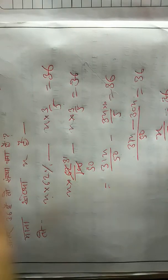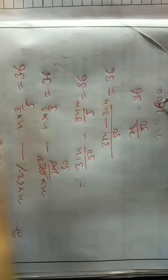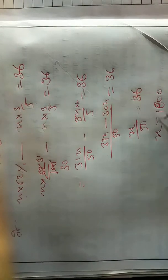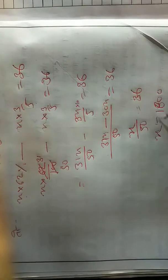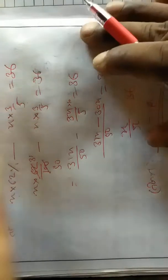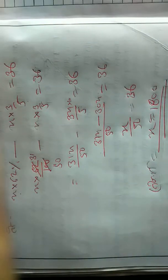संख्या का 62% और उसी संख्या के तीन बटे पांच के बीच का अंतर 36 है। अंतर मतलब घटाओ — यानी कि x का 62% माइनस x के तीन बटे पांच बराबर 36 करेंगे।